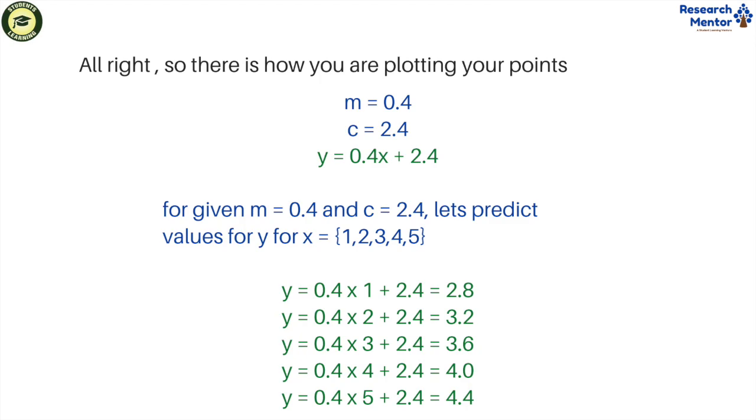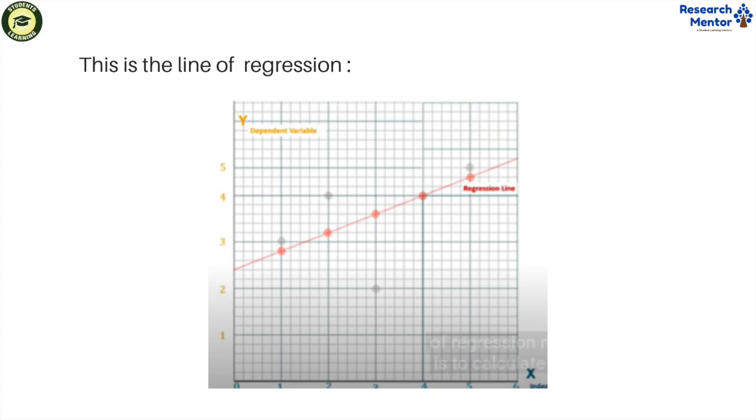So the first value of y equals 2.8, the second value is 3.2, and the third value is 3.6. The fourth value is 4.0, and the last value is 4.4 on the basis of x equals 1, 2, 3, 4, 5. So finally, this is the line of regression showing the plot.